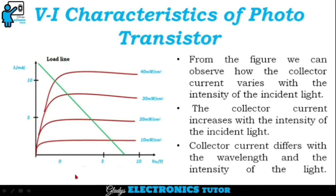This is the VI characteristics of the phototransistor. From the figure, we can observe how the collector current varies with the intensity of the incident light. The collector current increases with the intensity of the incident light, and collector current differs with the wavelength and the intensity of the light.